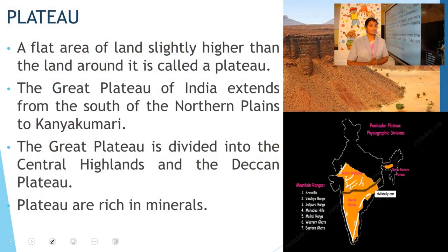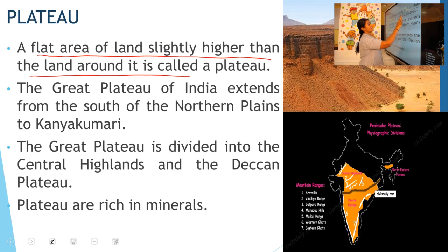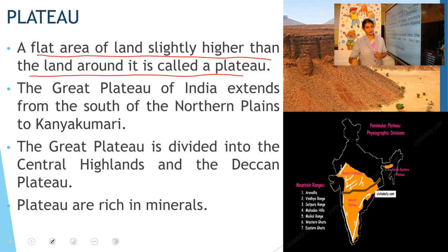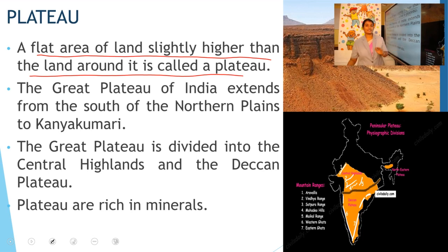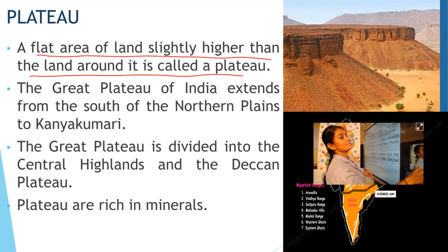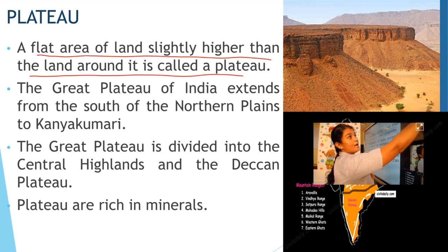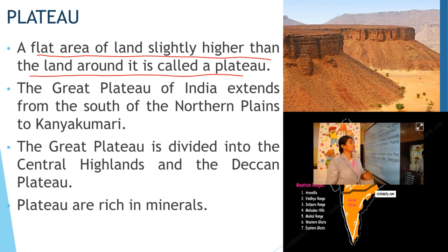Next landform is plateau. Plateau is a flat area of land slightly higher than the land around it. For example, in your classroom there is a table for your teacher — a table has a flat surface and is slightly higher than the ground. Just like a table, a plateau is a flat area of land which is slightly higher than the land around it.